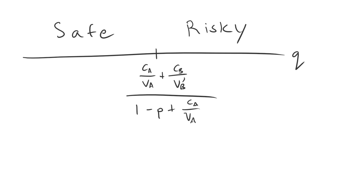Welcome back to Bargaining and War. In this lecture, we're going to take a comparative static on the model that we solved for in the previous lecture. We're looking at a situation where A does not know whether B has a low or high valuation of the prize at stake. What we saw under those circumstances is that A's optimal demand is a function of its prior belief, Q.